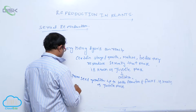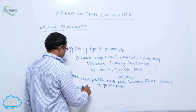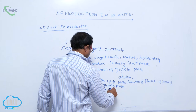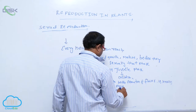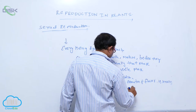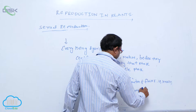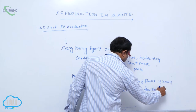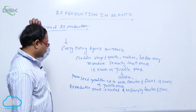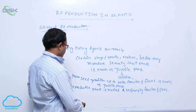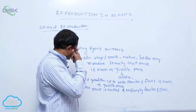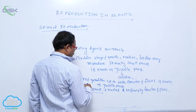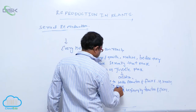The reproductive phase is marked by the beginning of flower formation. So up to before the formation of the flower, that is known as the juvenile phase, and the reproductive phase is marked by the formation of the flower.